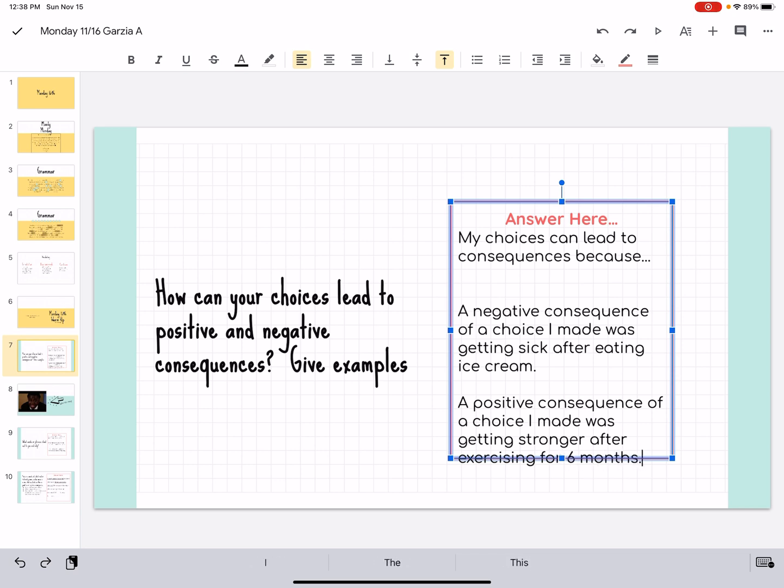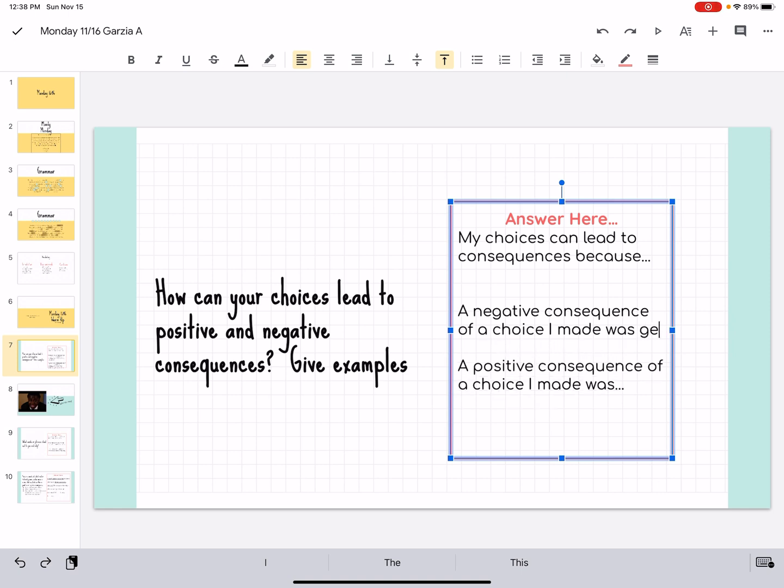Don't steal mine, y'all. A positive consequence of a choice I made was getting stronger after exercising for six months. Okay, so there are some examples, right? I didn't want to answer the first one for you because I feel like we'll all have fairly similar responses. So, I'm deleting mine so you can put yours in. This is like a quick, right? Think with this. You can't get these wrong. They're your own thoughts. They're your own opinions. So, I want to know what is in your brain whenever it comes to discussing consequences. And a consequence, remember, is the result of an action or a choice. It's what happens because something else happened.